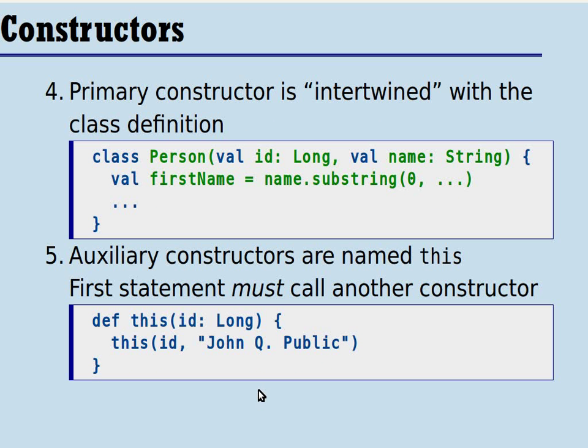Now let's move on to constructors. Probably the most visible difference between Scala and Java classes is the way that the primary constructor appears in the class definition. The primary constructor is the most important constructor of a class. And in Scala, it appears somewhat intermingled with the rest of the class.